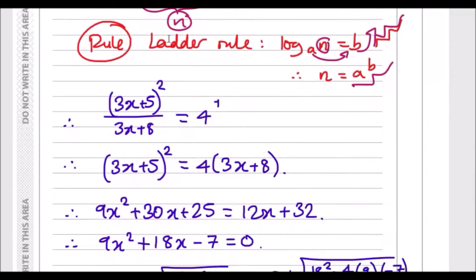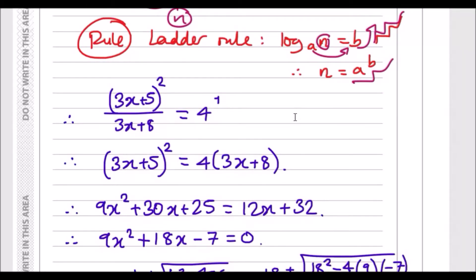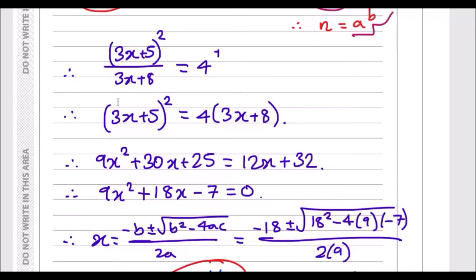Back to the question. Now we're here, this is easy to solve. All we want to do now is clear the fraction, so times (3x+8) across. Then you're left with the squared bracket—expand it. Remember this is (3x+5) times (3x+5), and if you expand it correctly using the FOIL method, you should get something like this.